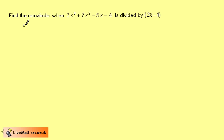We want to find the remainder when 3x cubed plus 7x squared minus 5x minus 4 is divided by 2x minus 1.